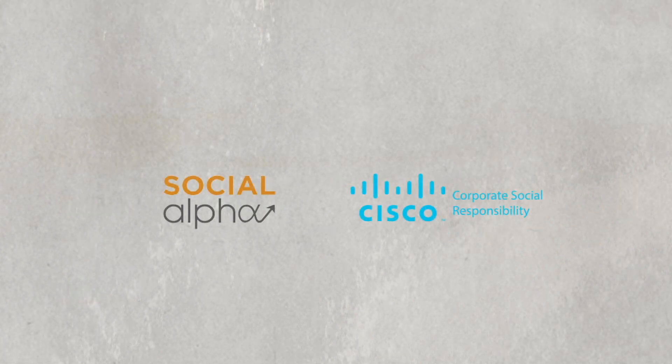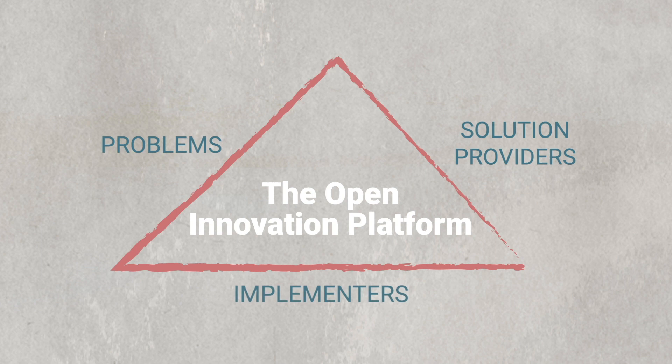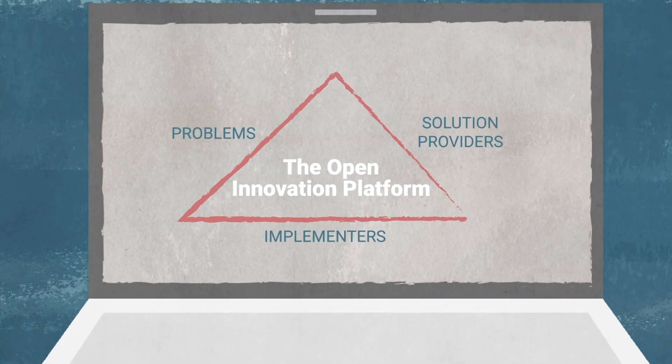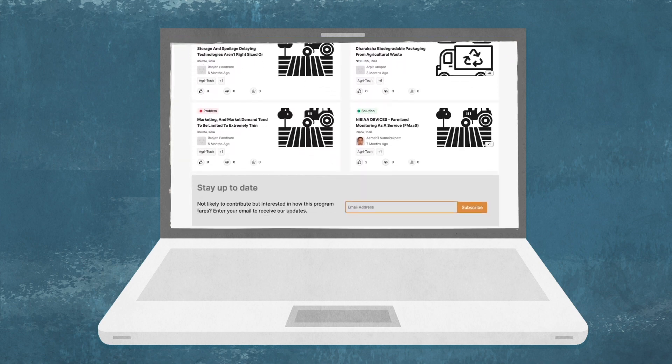SocialAlpha and Cisco have come together to create an Open Innovation Platform. The idea was to bring together multiple stakeholders — innovators, entrepreneurs, civil society organizations, corporations, foundations, government agencies — everybody together on a platform, so that problem statements, potential solutions, funders and other market participants all have visibility into innovation.